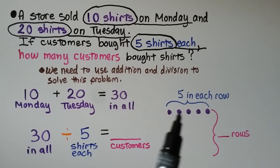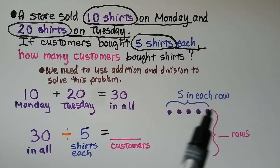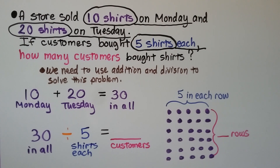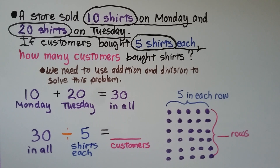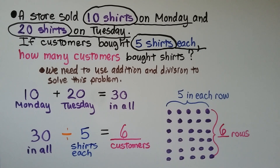We can make an array. There are 5 shirts for each customer, and we draw rows of 5 until we get to 30. We get 1, 2, 3, 4, 5, 6 rows with 5 in each row — that means there were 6 customers. 30 divided by 5 is equal to 6. We count how many rows we made to reach 30, so that's 6 customers.